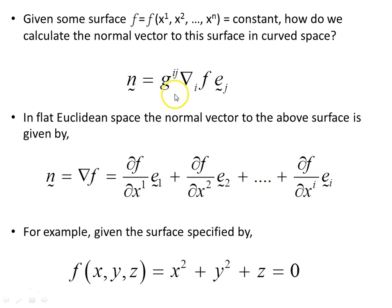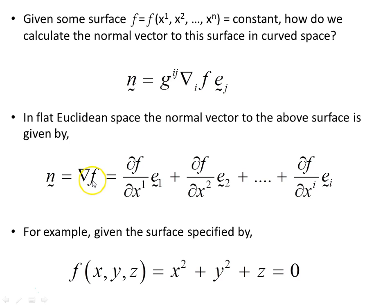Well, this is the expression for it, but what does this mean? To show what it means, let's begin in flat Euclidean space, where the normal vector to the above surface is given by n = del (or nabla) of the scalar f. That's defined according to these partial derivatives multiplied by these basis vectors, up to however many dimensions we have.